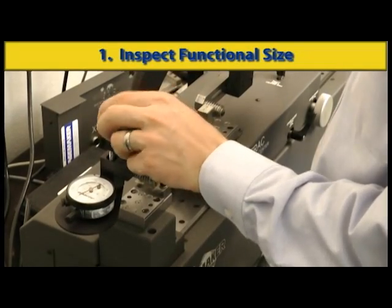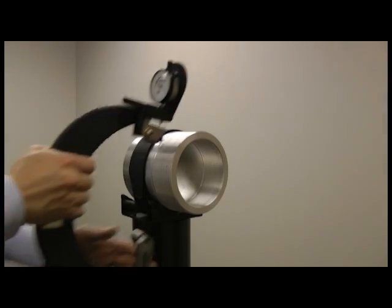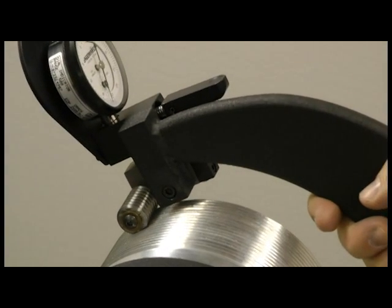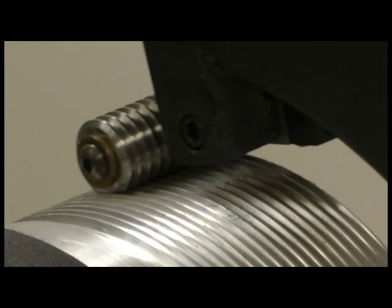First, set your functional roll gauge to the appropriate setting value. Then place the thread roll onto the connector. Rock the gauge back and forth and observe the functional measurement as indicated on the dial.